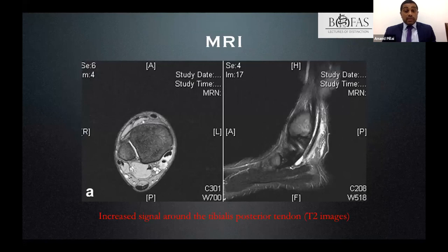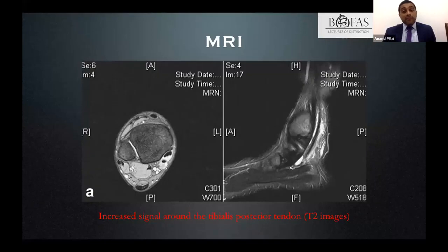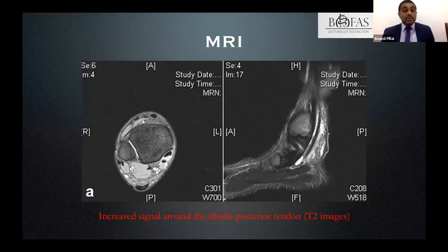MRI scans are useful — they show tendon involvement, tendinopathy, and fluid around the tendon sheath. However, MRI is not pathognomonic. In burned-out tibialis posterior tendinopathy where the tendon is not functioning and deformity is present, the MRI scan may come back as relatively normal.